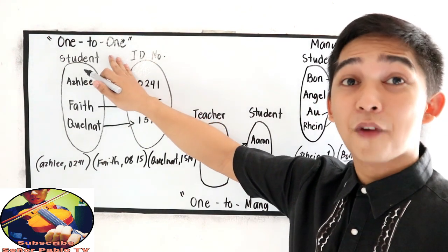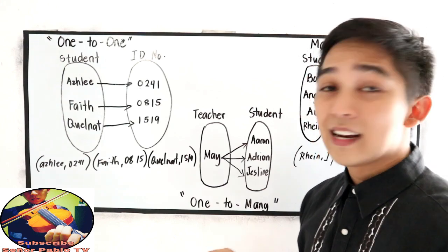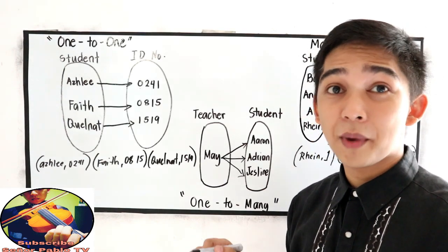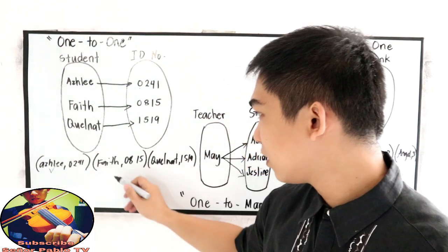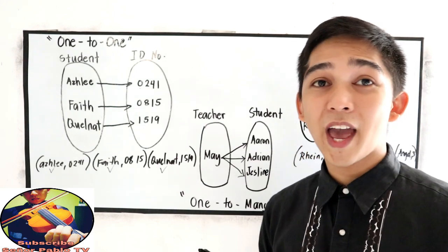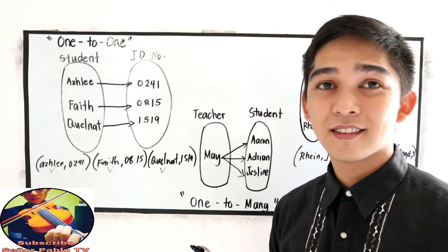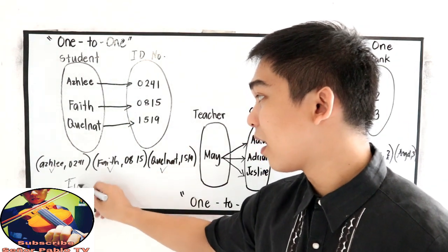One-to-one, function or not? Let's check the domain. So, the domain must not be repeated. For Ashley, Faith, and Kelna, no element in our domain is repeated. So, one-to-one is a function.